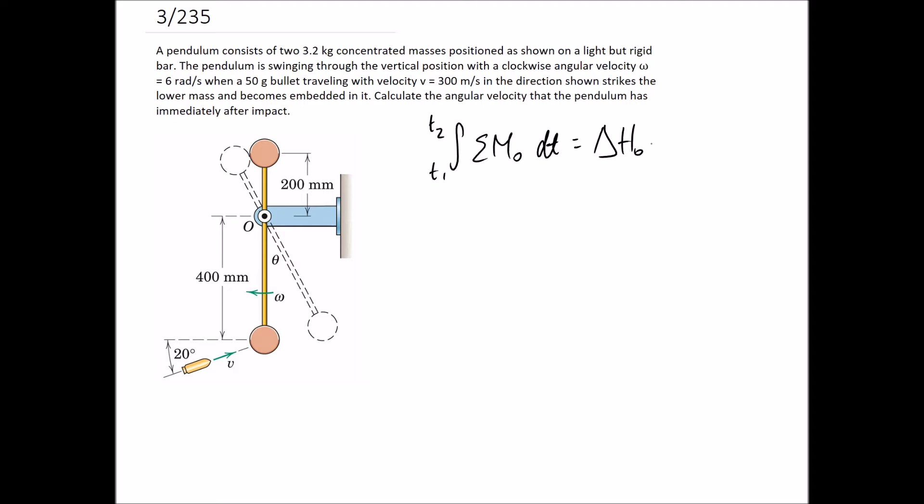For us, we're going to be using the point O as labeled. It makes sense for all of these questions to use the pivot point if that exists, which often is the case. We're going to be able to cancel out the left-hand side of this equation because time 1 and time 2 are the instant before and the instant after impact and negligible time is going to have passed through that period.